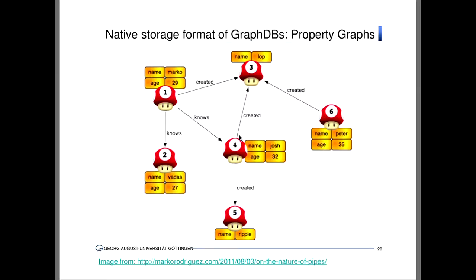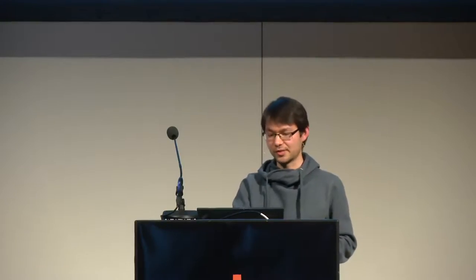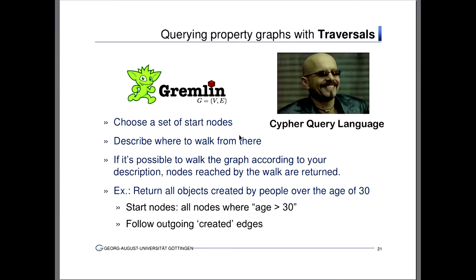The native storage format for graph databases is a so-called property graph — different from tables. A property graph is just a graph with properties attached to nodes, which you can think of as Python dictionaries or key-value pairs attached to each node. Also, the edges are labeled — so it's not just an edge from A to B, but an edge labeled 'knows' or 'created' from A to B. That's all a property graph really is, and that's the native storage format of graph databases.